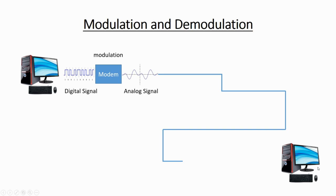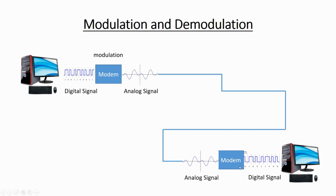The data travels to the server machine, but even the server machine is a digital machine — it will not understand the analog signal. So again the modem comes into action: the modem takes this analog signal and converts it back into a digital signal. This reverse process is called demodulation. So analog signal gets converted back into digital signal, the server machine understands it. Modulation is digital-to-analog, and demodulation is analog-to-digital.